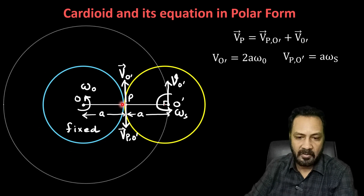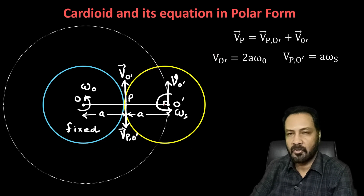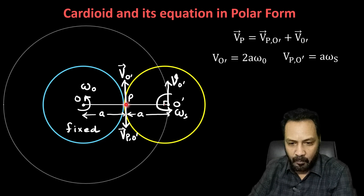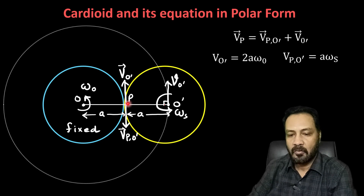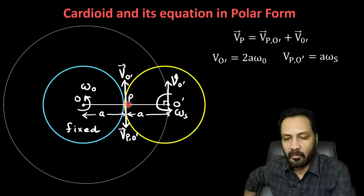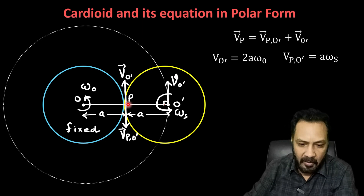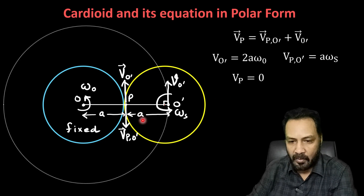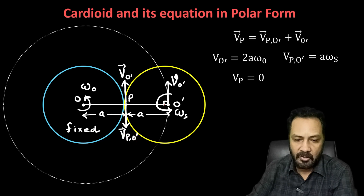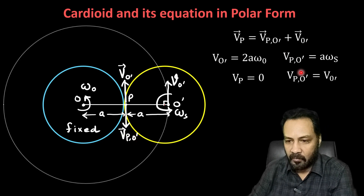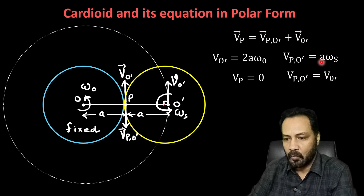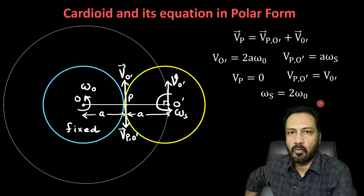Since this is a fixed circle, the point of contact has zero velocity. The rolling circle rolls without slipping, so there is no relative motion at the contact point — meaning the velocity of point P must also be zero. So v_P = 0, which means v_O' must equal v_PO'. Therefore 2a × omega_o = a × omega_s, giving us omega_s = 2 × omega_o. That is the angular velocity relationship.